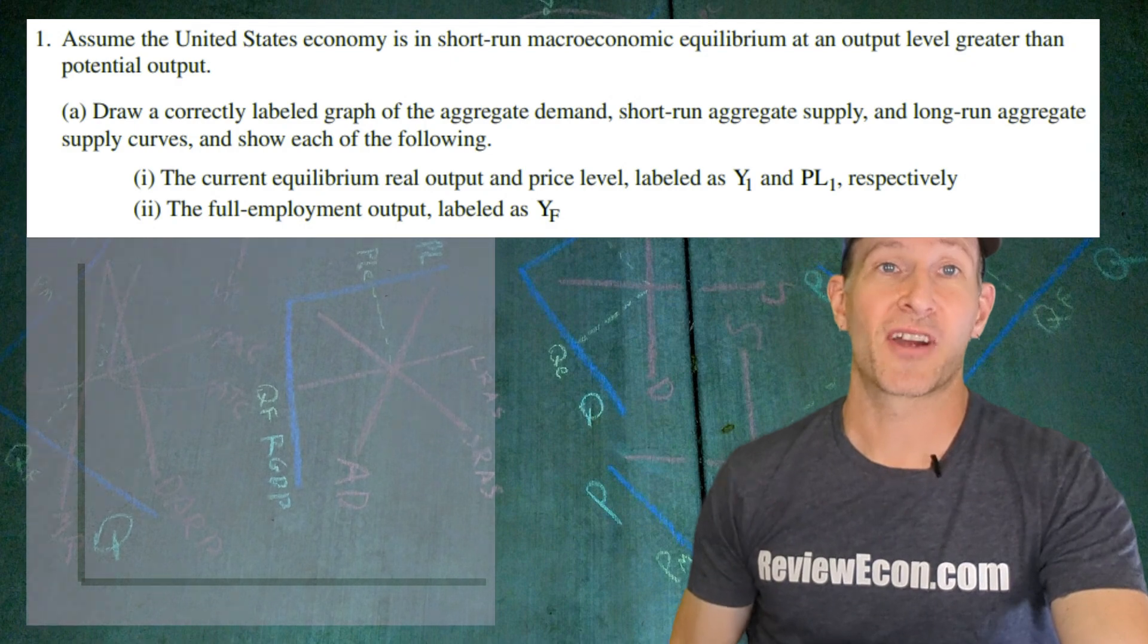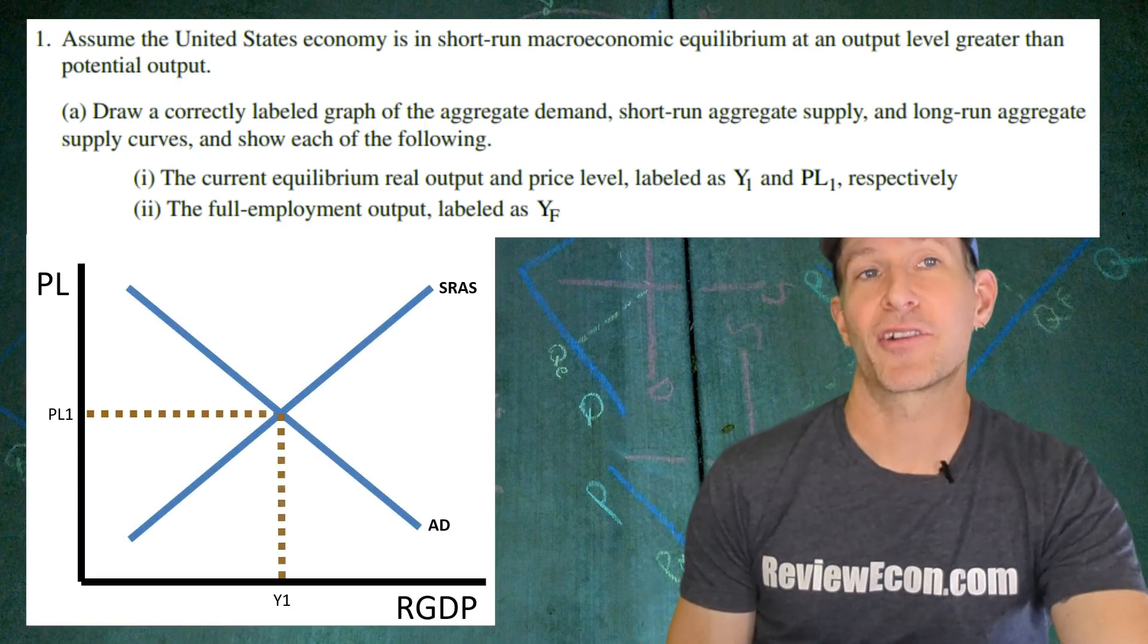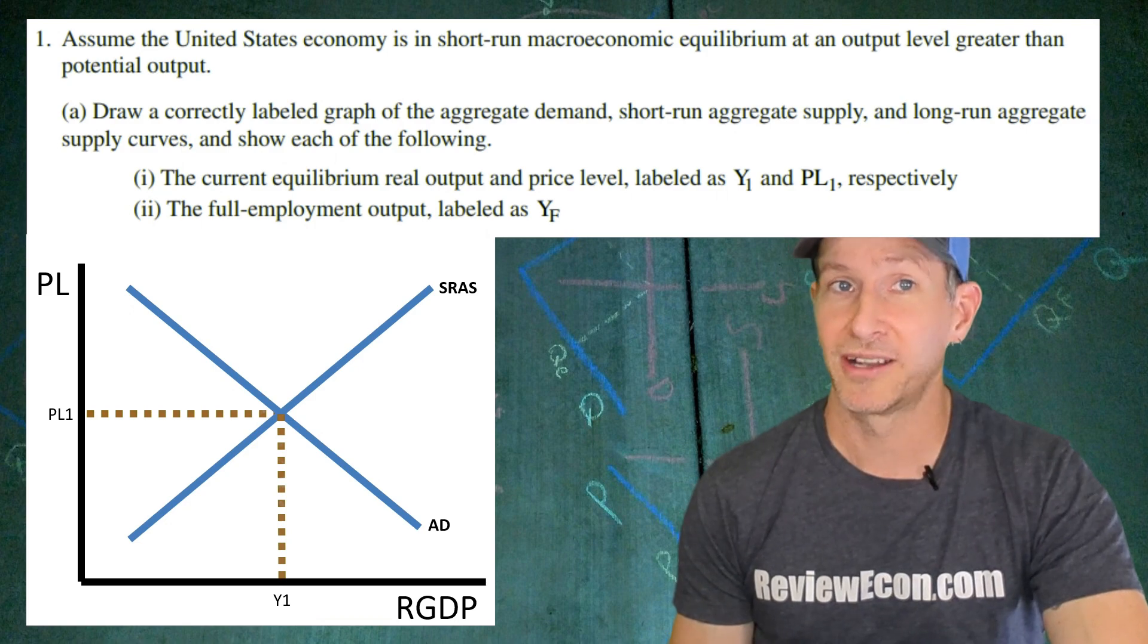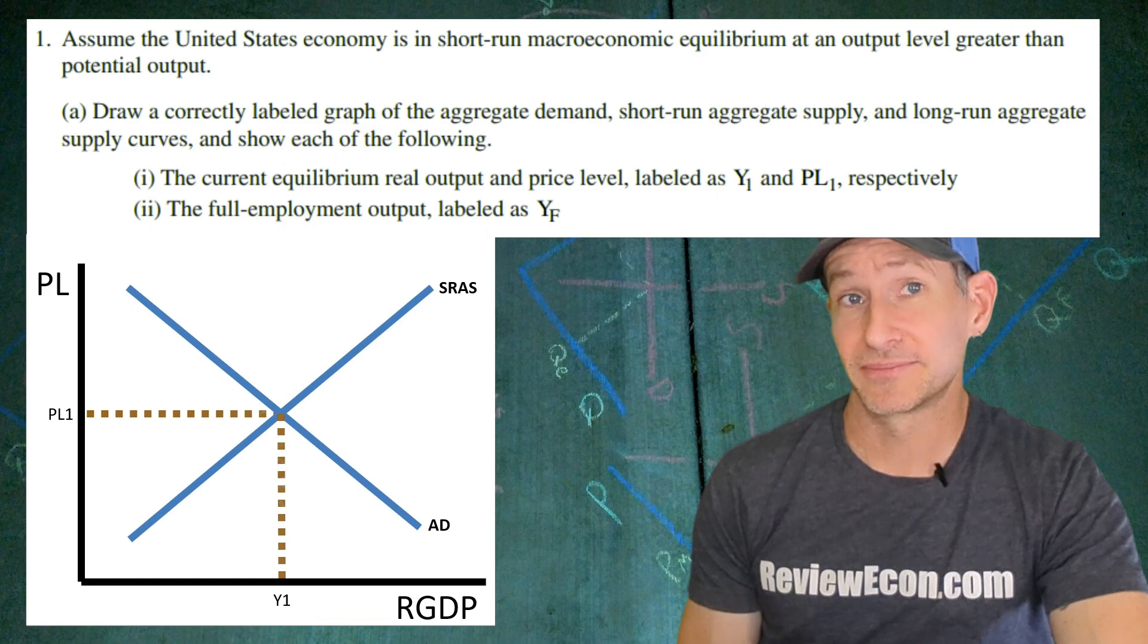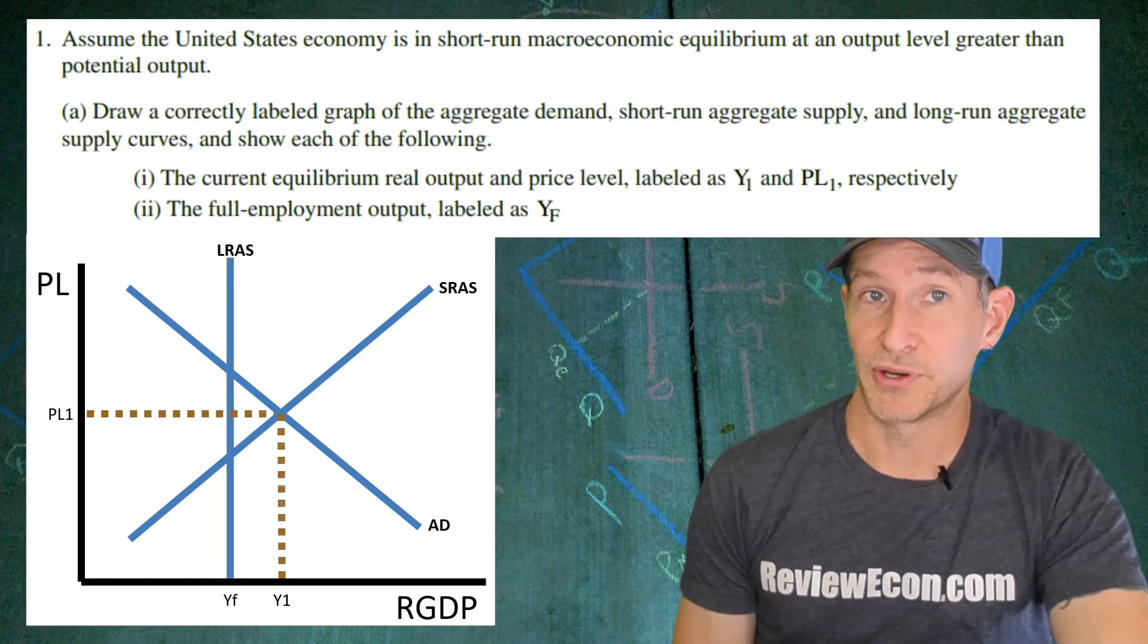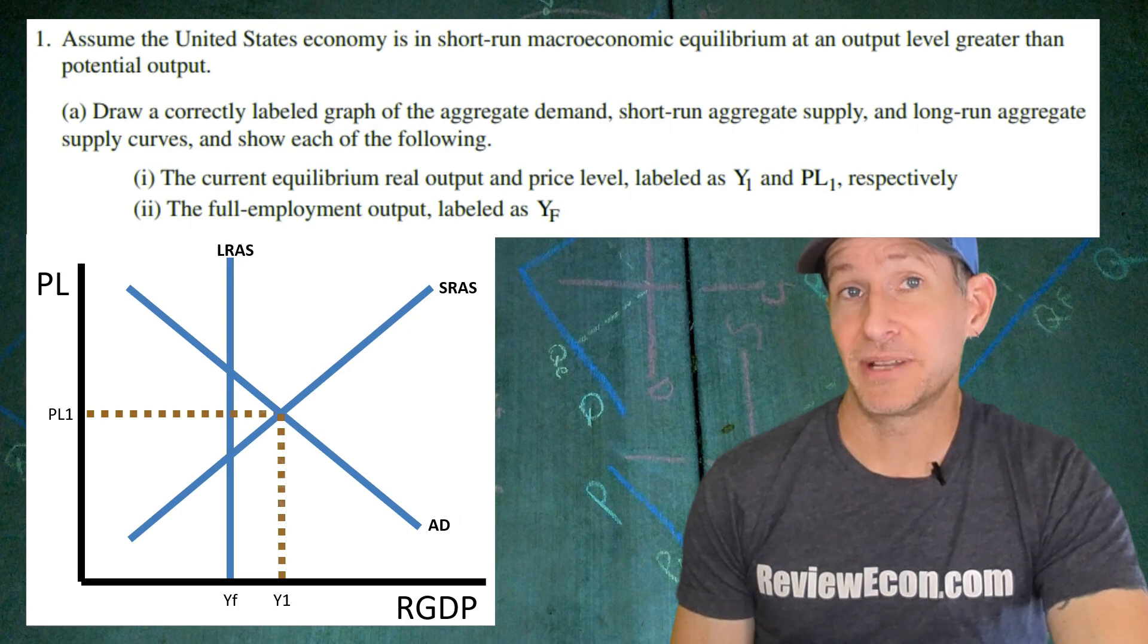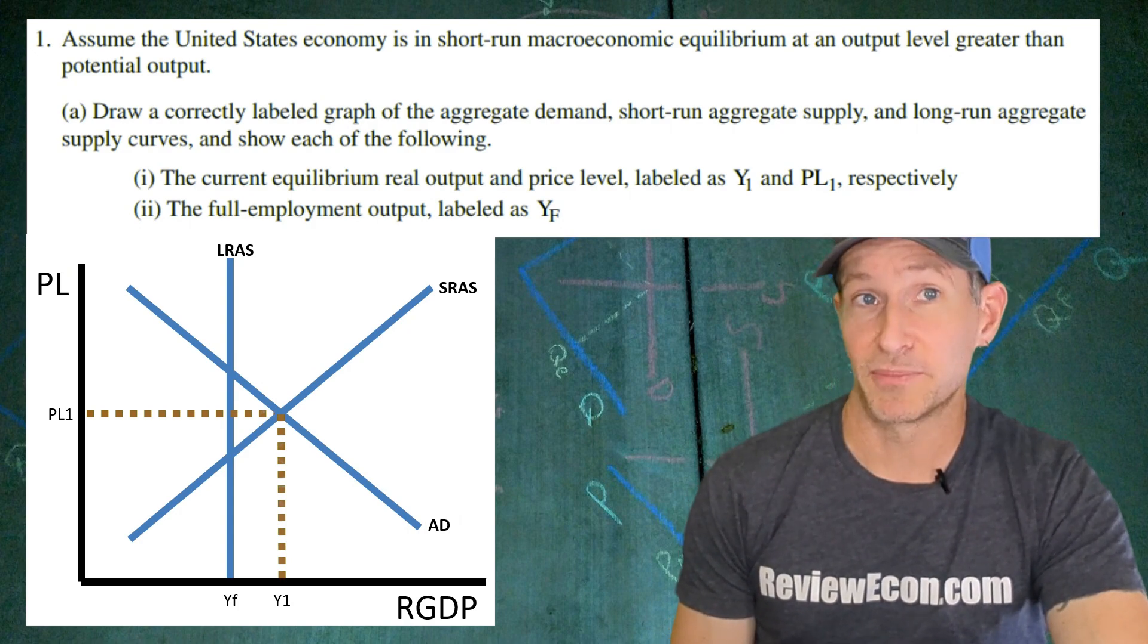First we need to have our axes labeled PL and RGDP for real GDP, a downward sloping aggregate demand curve, upward sloping short-run aggregate supply curve. And at the intersection of those two curves you have our current price level labeled PL1 and current output labeled Y1. For the second point we're going to add in the long-run aggregate supply curve to the left of the current output. And beneath that long-run aggregate supply curve we have our YF. Since Y1 is greater than YF that means we have an inflationary gap.